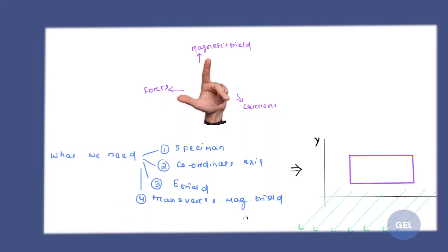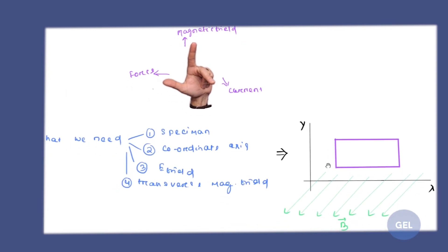For the Hall Effect, we need four very simple things: a specimen, a coordinate axis, an electric field, and a transverse magnetic field. Take a coordinate axis such that the transverse magnetic field is perpendicular to it. Then take a specimen which is parallel to the first quadrant, such that the transverse magnetic field is also perpendicular to the specimen.